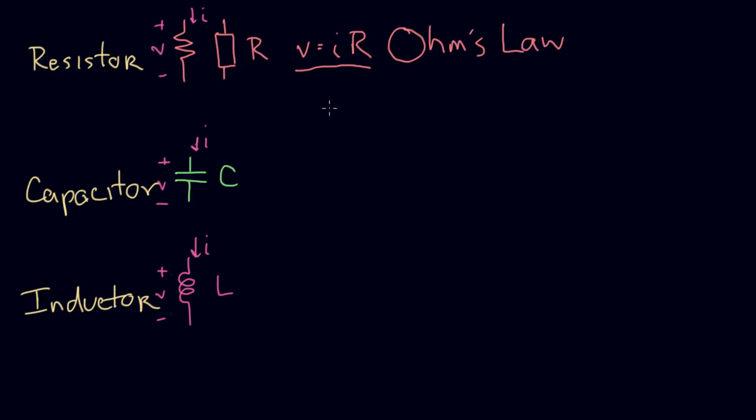Now for the IV relationship for the capacitor. The capacitor has the property that the current through the capacitor is proportional to the rate of change of the voltage. Not to the voltage, but to the rate of change of the voltage. And the way we write that is current equals, C is the proportionality constant, and we write dV dt. So this is the rate of change of voltage with respect to time. We multiply that by this property of this device called the capacitance, and that gives us the current. This doesn't have a special name, but I'm going to refer to it as the capacitor equation.